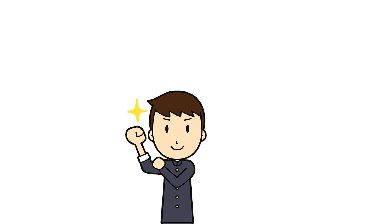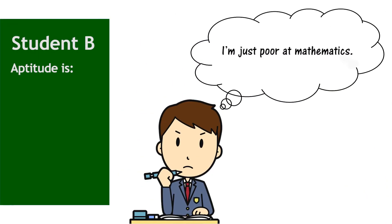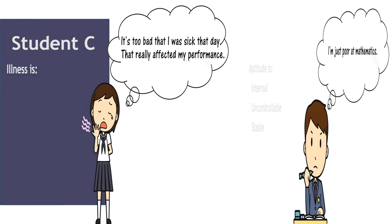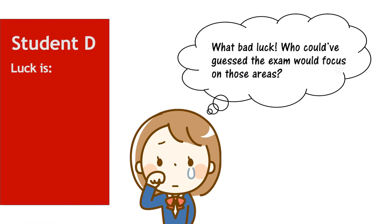So if we look at those six examples again, each of them falls into a different combination of factors. Student A's reason — 'I didn't do enough revision these last couple of months' — is categorized as internal, controllable, and unstable. Student B's reason — 'I'm just poor at mathematics' — is internal, uncontrollable, and stable. Student C's reason — 'It's too bad that I was sick that day' — is internal, uncontrollable, and unstable. Student D's reason — 'What bad luck! Who could have guessed the exam would focus on those areas?' — is external, uncontrollable, and unstable.